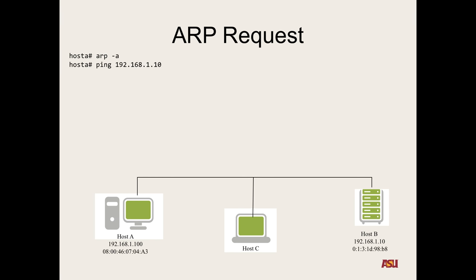So we're on host A — host A's IP address is 192.168.1.100 — and it wants to talk to host B, which is 192.168.1.10. So it knows its own MAC address, but it doesn't know host B's MAC address. So what does the ping command do? It's actually an IP level thing — it's sending an IP packet with an ICMP message type to say hey, are you up? And then if that host is up, it's supposed to reply back with what we sent.